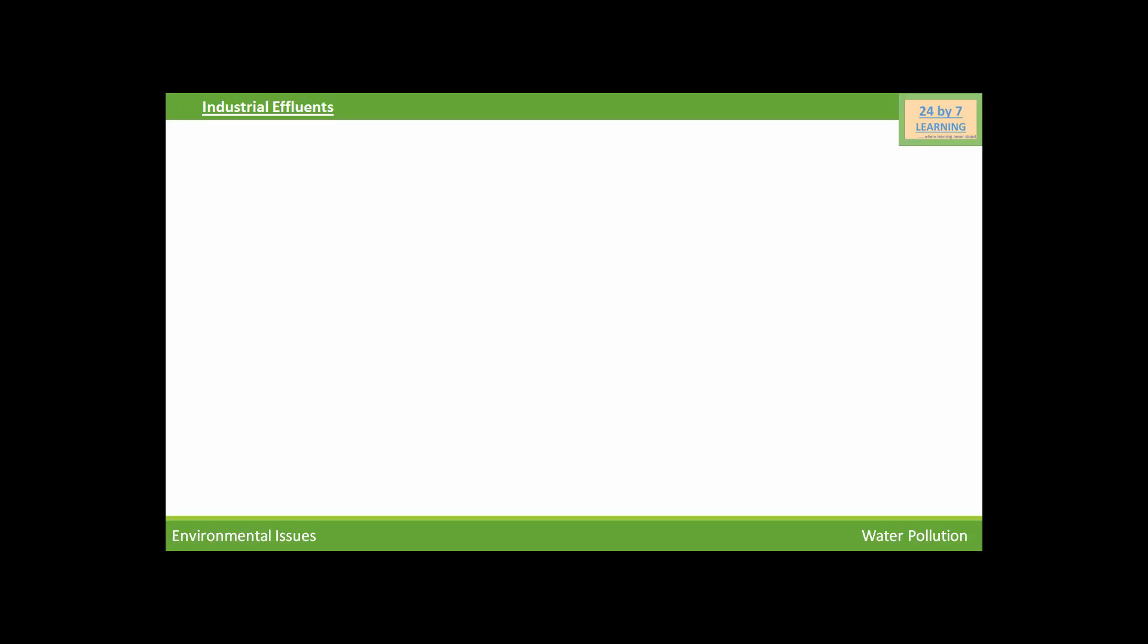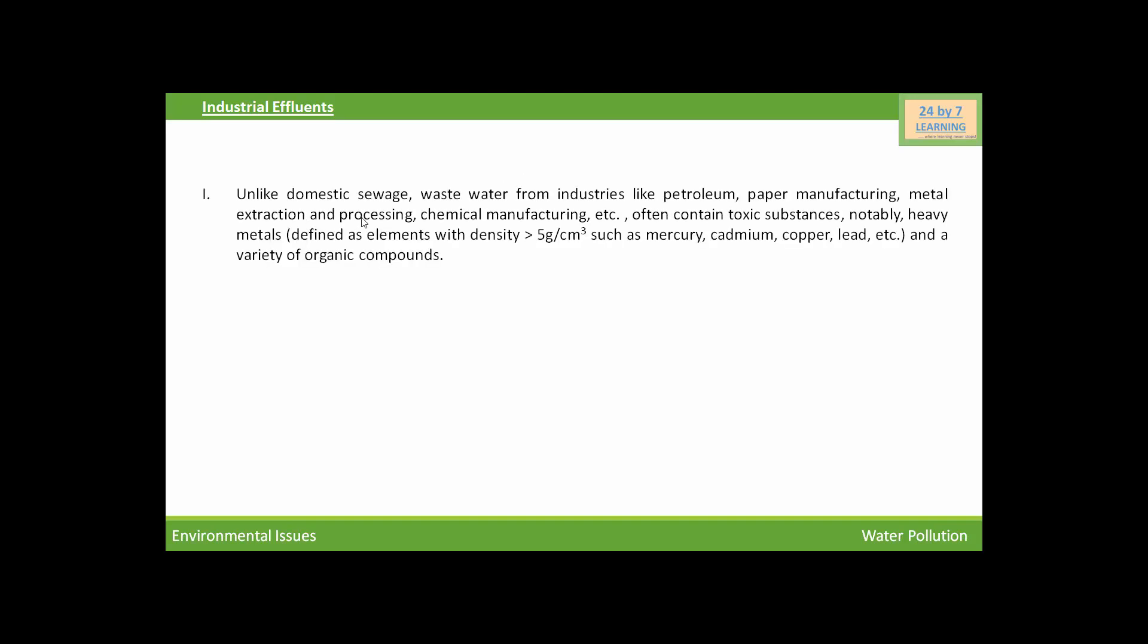Here is another major cause of water pollution: industrial effluents. Unlike domestic sewage, wastewater from industries like petroleum, paper manufacturing, metal extraction and processing, chemical manufacturing, etc., often contains toxic substances.